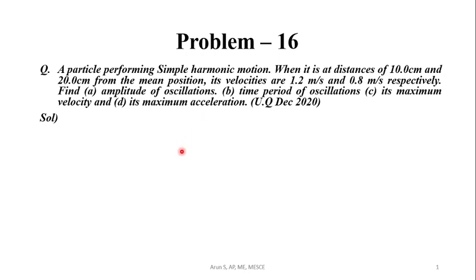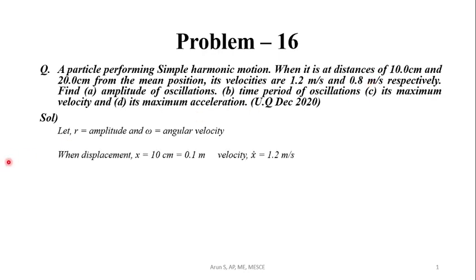We will assume the amplitude of oscillation to be r and the angular velocity to be omega. When the particle is at a distance of 10 cm, its velocity is 1.2 m/s, and when it is 20 cm from the mean position, its velocity is 0.8 m/s. That is, displacement x = 10 cm = 0.1 m gives x-dot = 1.2 m/s, and displacement x = 20 cm = 0.2 m gives x-dot = 0.8 m/s.